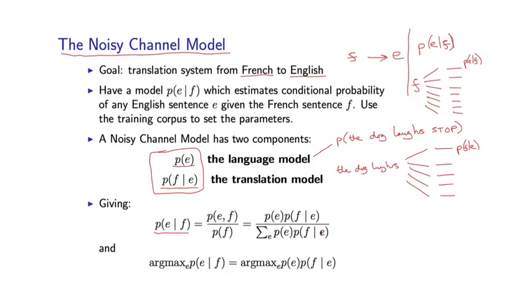So given a new French sentence F, we are going to output the most likely translation under the model. That means we're going to search for the sentence E that maximizes this conditional probability. Now I can plug this formula in here and notice that this denominator is constant with respect to the English sentence we're searching over.